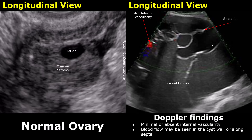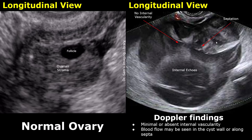Blood flow may be seen in the cyst wall or along the septa. Here is another case of a mucinous cystadenoma. Doppler is applied here, but we do not see internal vascularity within the mass. This suggests that it is a benign mass. The other features that suggest it is a mucinous cystadenoma are the presence of internal echoes, internal septations, and a smooth round shape and contour.